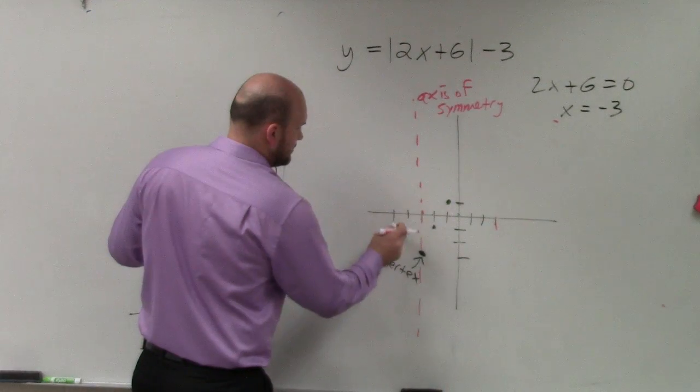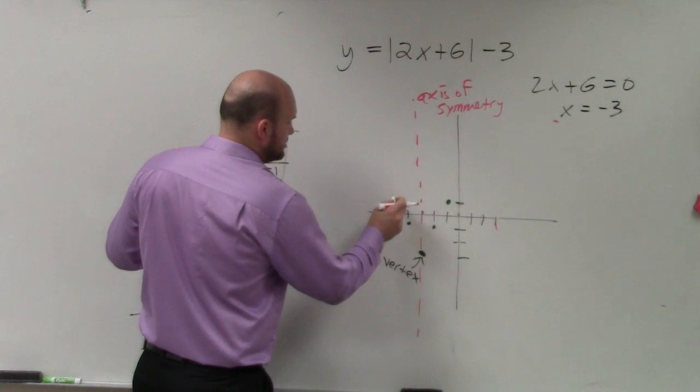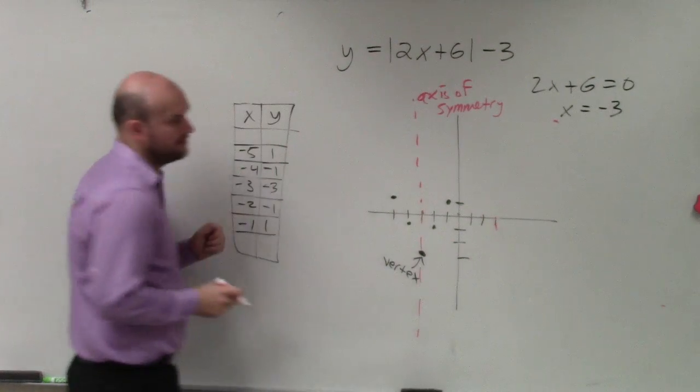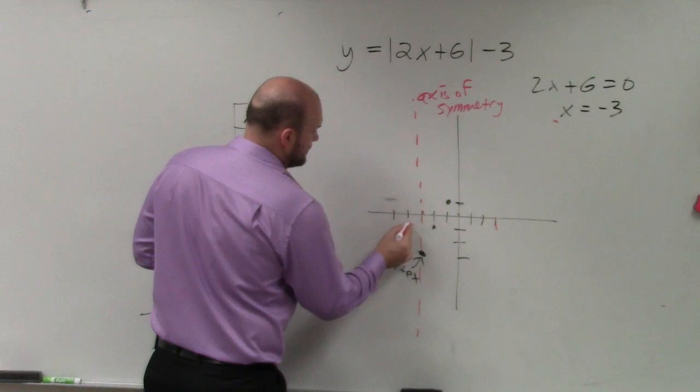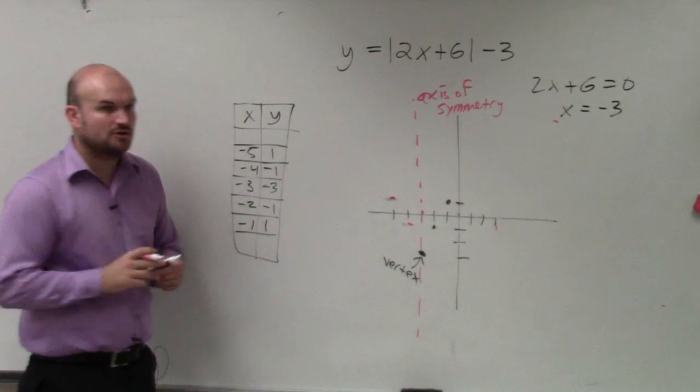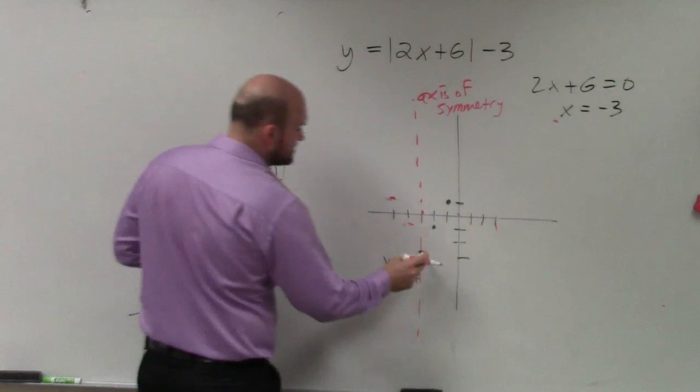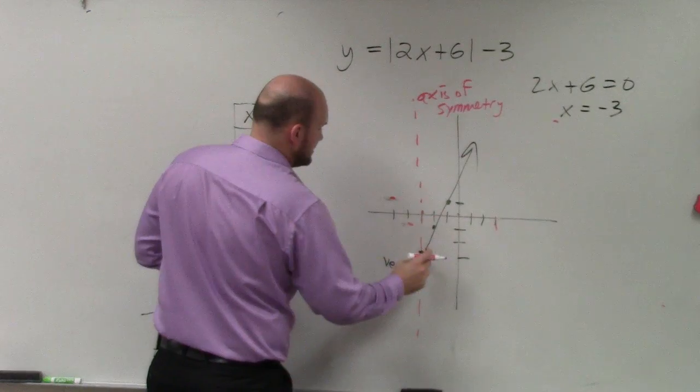So basically, these points are symmetrical of each other. Or maybe I'll use different colors so you guys can see it. So they're symmetrical points. Now we just go and connect. And we see that we have our v-graph.